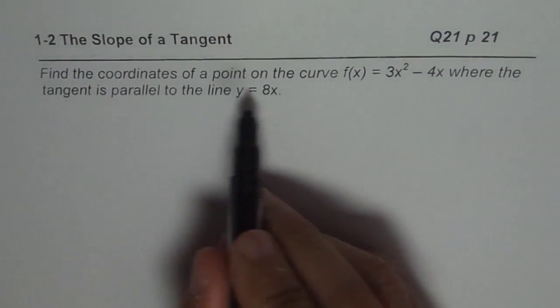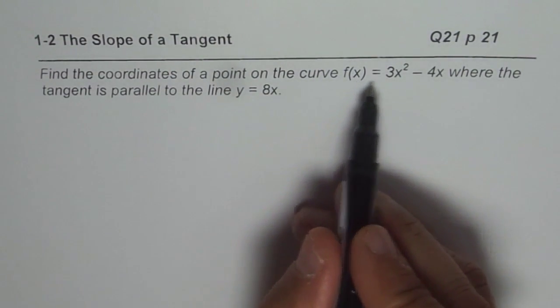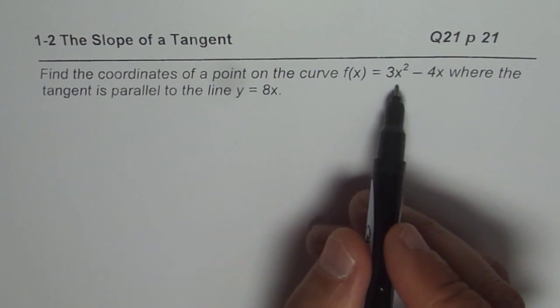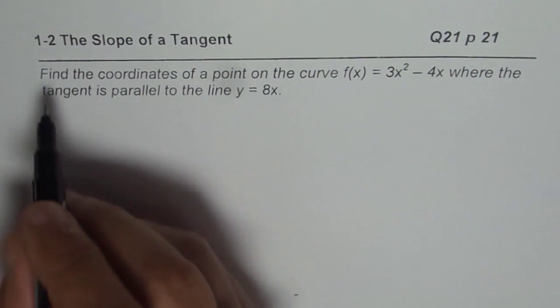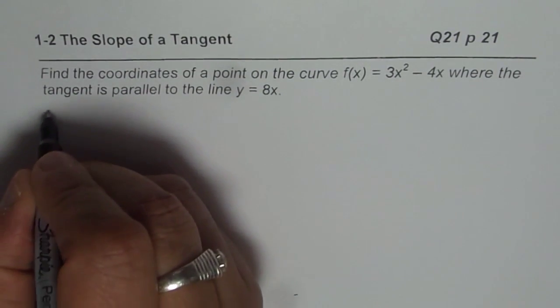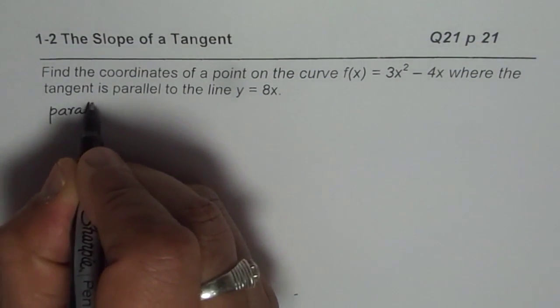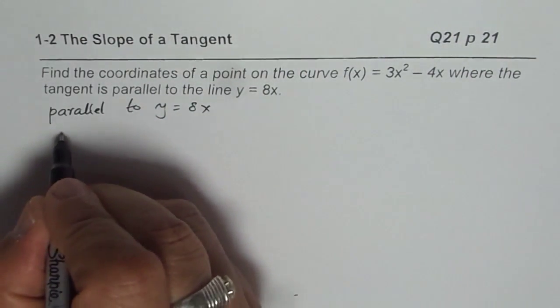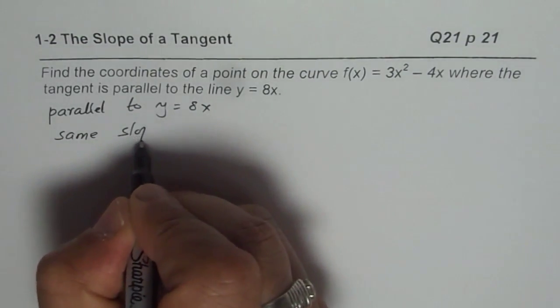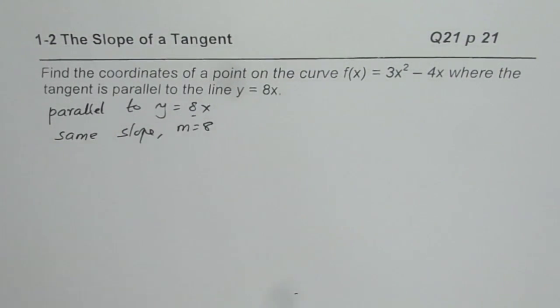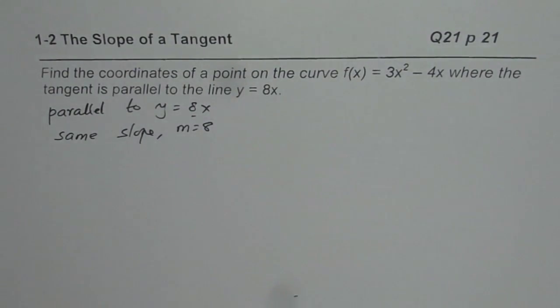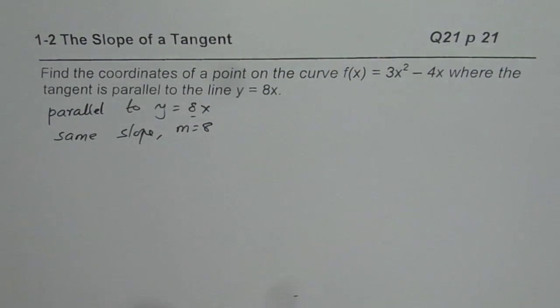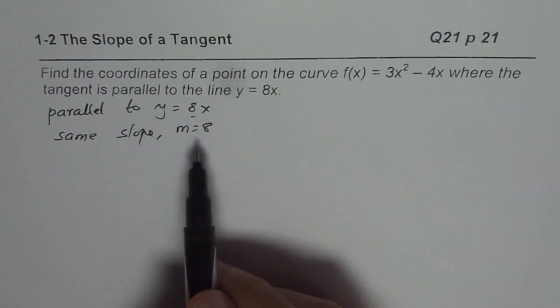To find the coordinates of the point, we should use difference quotient method, the first principle to find the tangent, and equate it to the tangent of the given line. Since we are given tangent is parallel to y = 8x, that means we have same slope. So, the slope will be m = 8, and we are expecting slope of the tangent on this curve to be 8.